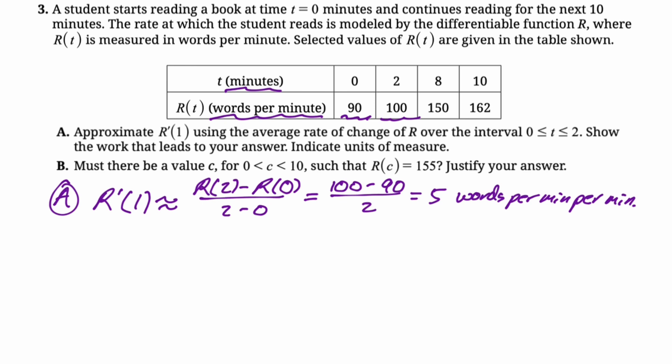For part B, must there be a value of c between zero and 10 such that r of c is equal to 155? Justify your answer. So r of t is what we are given and we're being asked if there's a value of that function, which means in my mind this is an intermediate value theorem problem, right?